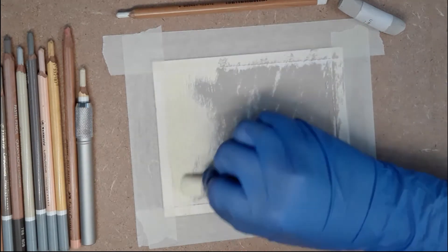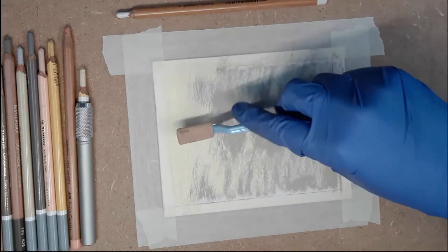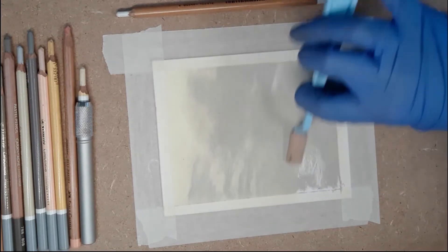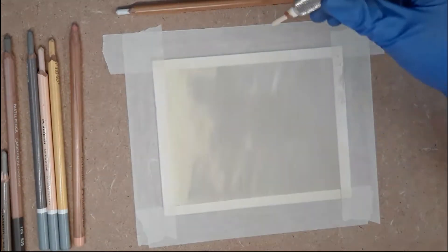Then we blend everything out and you can see where we blended the two colors together we now have another tone on the paper. You can blend however you like but I love to use the soft tool by Pan Pastel. This tool is especially handy on smaller areas like these.